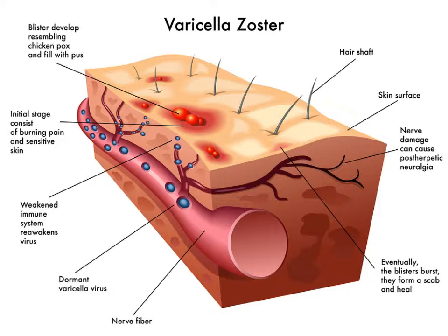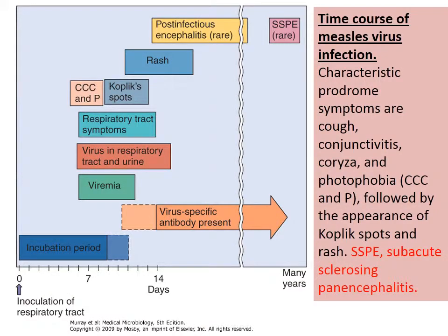The spinothalamic tract carries pain, touch, and temperature. If viruses affect your neurons, you have problems with all three sensations simultaneously, because the pathways travel together. This explains many clinical conditions where all three sensory modalities are disturbed.